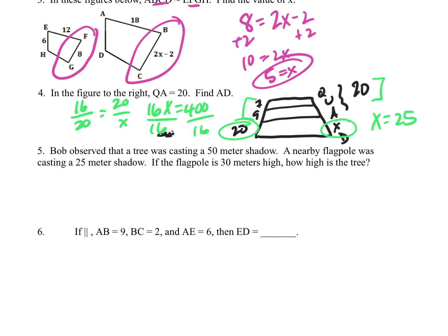On our next problem, we're looking at a picture, which will help us. So we have a tree that is casting a 50-meter shadow, and a nearby flagpole is casting a 25-meter shadow. If the flagpole is 30 meters high, how tall is the tree? So X over 50 equals 30 over 25. Cross multiply 25X equals 30 times 50 is 1,500. Divide by 25, and 60 is equal to X.